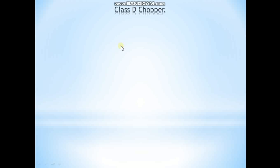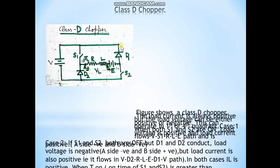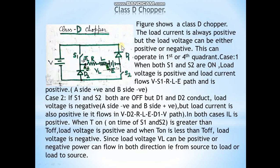Now I will discuss Class D chopper. In Class D chopper, the load current is always positive but load voltage can be either positive or negative, so it can operate in the first or fourth quadrant.